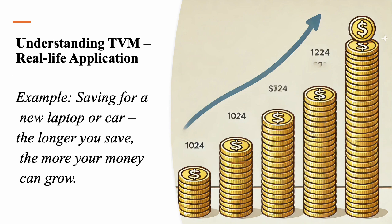Let's look at a practical example. Imagine you are saving up for a big purchase, like a laptop. If you start saving now, even a small amount each month, that money will grow over time. This is the power of TVM. The sooner you start saving, the less you will need to save each month to reach your goal.